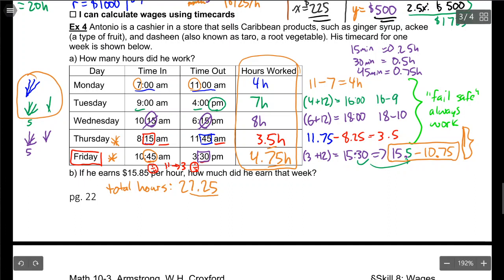So last question, he earns $15.85 per hour. So let's turn this into a rate, $15.85 per one hour. And he works for a total of 27.25 hours, I feel like I'm going to get an ugly decimal for this. X equals $431.9125, which we round to $431.91.